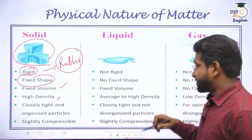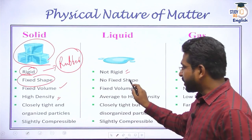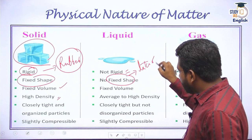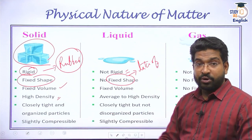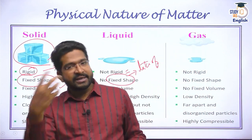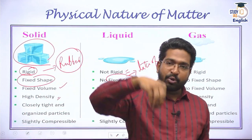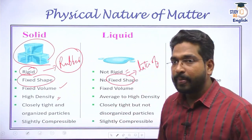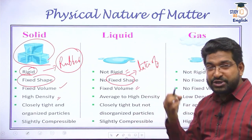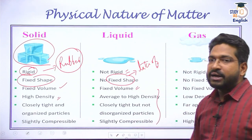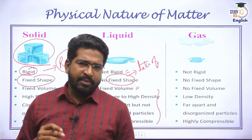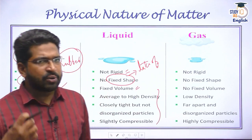Liquids are not rigid. They do not have any fixed shape — they take the shape of whatever object you put them into. If you pour water in a glass, it takes the shape of the glass; if you pour water in a bottle, it takes the shape of the bottle. Liquids have fixed volume, their density is lower compared to solids, and they undergo very little compression.